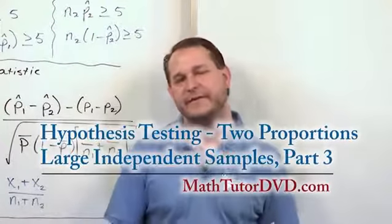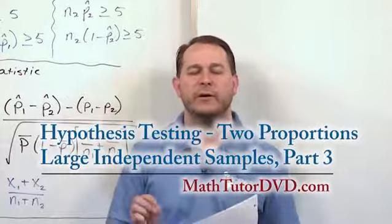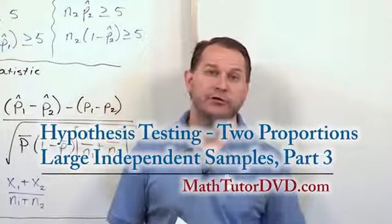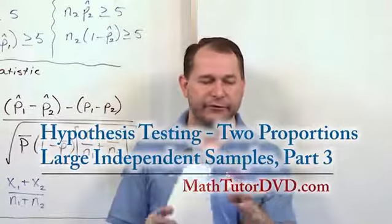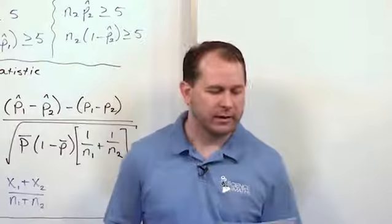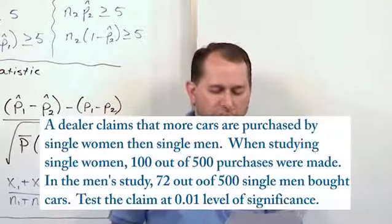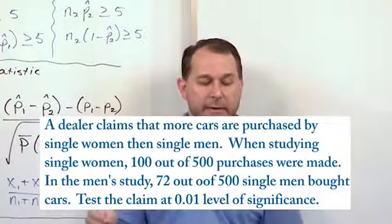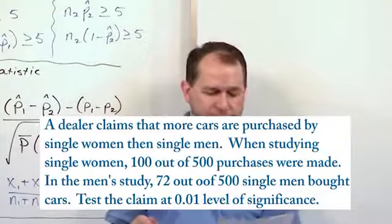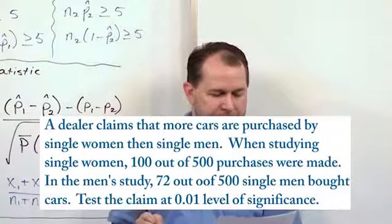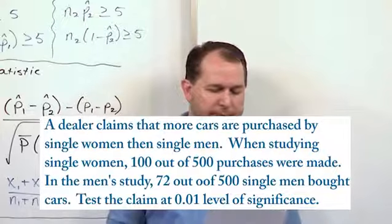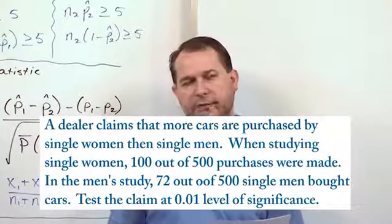Hello, welcome to this lesson in Mastering Statistics. We'll do another problem where we're doing hypothesis tests with two population proportions. Again, we're assuming large number of samples and independent samples, separate groups of people. The problem says a dealer claims that more cars are purchased by single women than single men. When studying single women, 100 out of 500 purchases were made by single women. In the men's study, 72 out of 500 single men bought cars. Test the claim at a 0.01 level of significance.